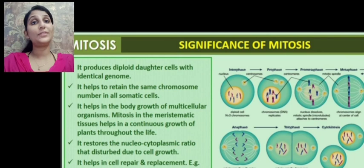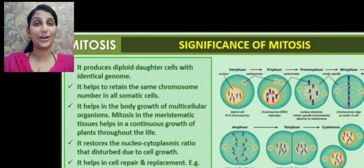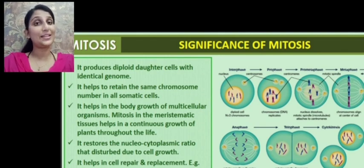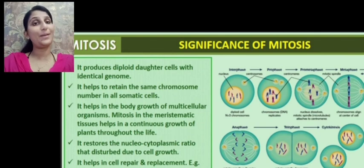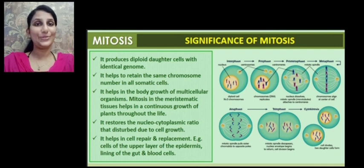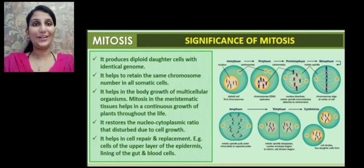For example, cells of the upper layer of the epidermis in plants, the gut lining of animals, and blood cells which get damaged and removed are replaced by mitosis. So these are the significance of mitosis. Dear children, thus we have come to an end of the first type of cell division called mitosis. Thank you.